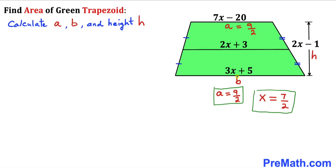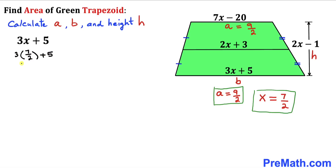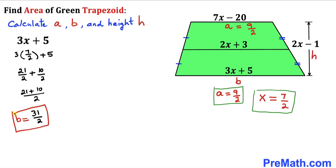For the bottom base b, represented by 3x plus 5: substituting x equals 7/2 gives 3 times (7/2) plus 5, which equals 21/2 plus 10/2. That gives us 31/2. So b equals 31 divided by 2.